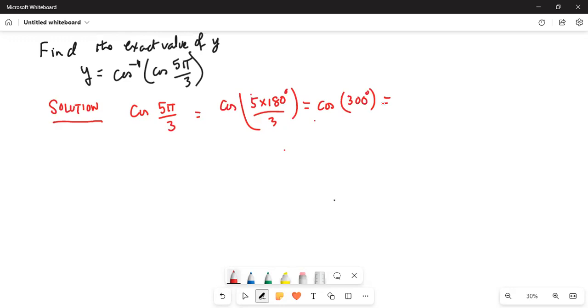So, cosine of 300 degree can be written as cosine of 360 minus 60. This makes the angle in the fourth quadrant.